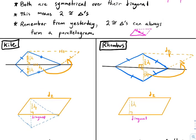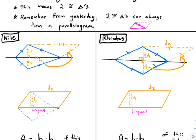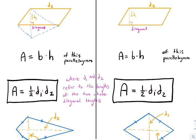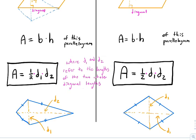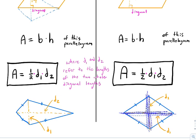For every single kite and every single rhombus, because they're symmetrical over that line, we can rearrange them and see that the area can be found by multiplying the two diagonals together. D1 and D2 refer to the whole lengths of the two diagonals — it doesn't matter which order. D1 representing the horizontal diagonal and D2 representing the entire length of the vertical one. So you just multiply D1 times D2 and then divide by two, or multiply by one half.